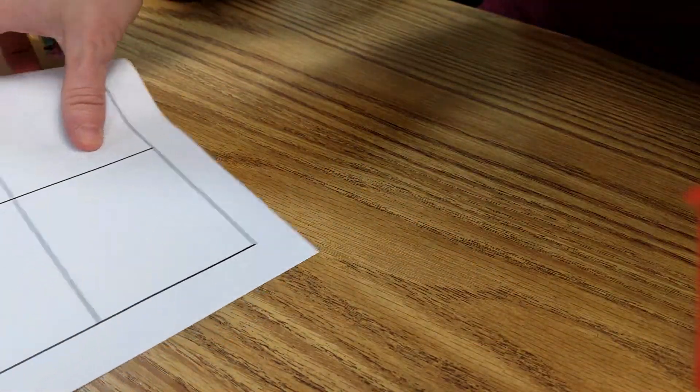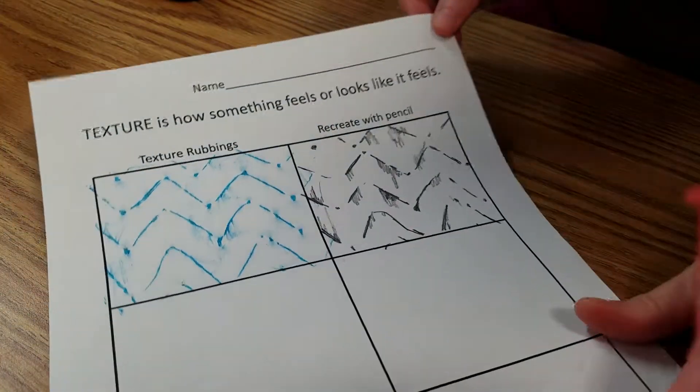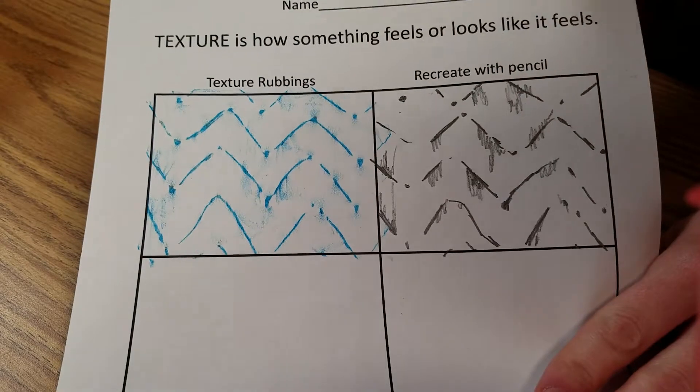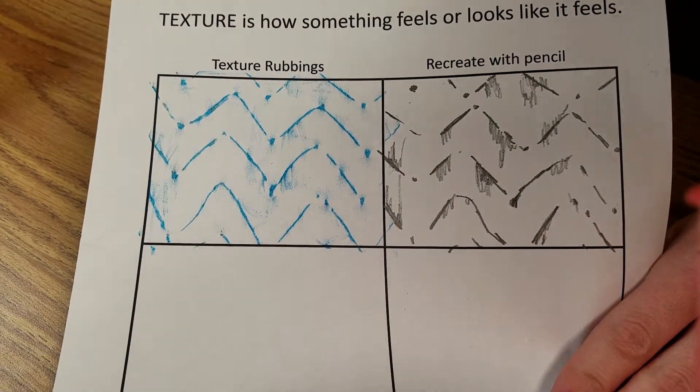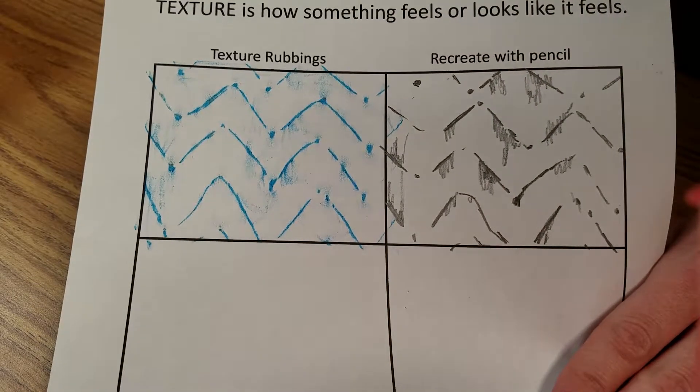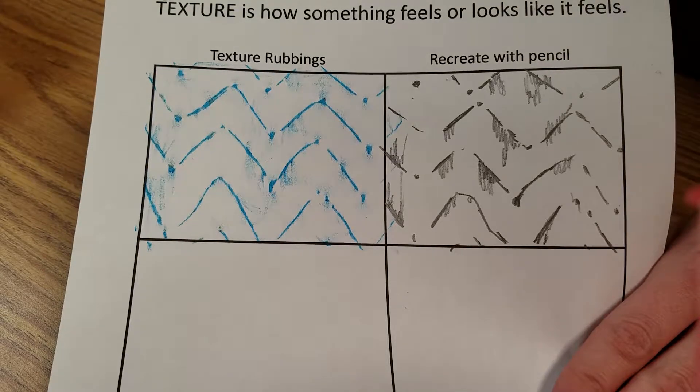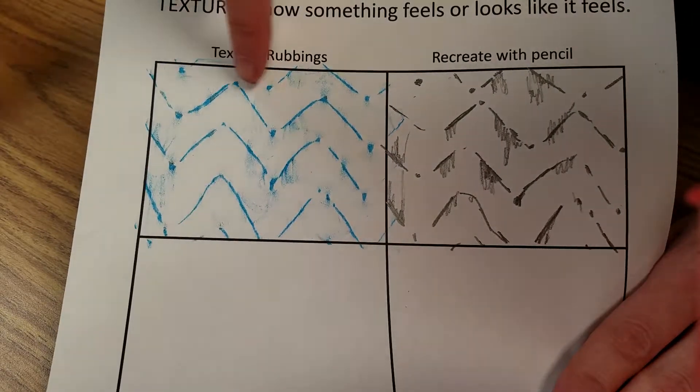Some of you today are going to do this sheet. Okay, so on one side you're going to do the crayon rubbing, the texture rubbing like I just showed you. But on this side you're going to get a pencil and you're going to recreate that texture using just a pencil only, not the texture plate at all. This one you'll do the crayon rubbing with the texture plate.